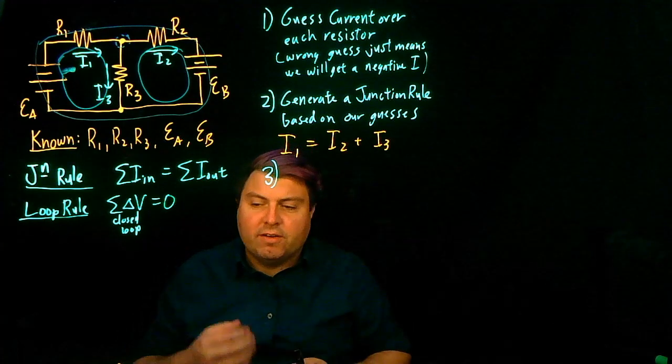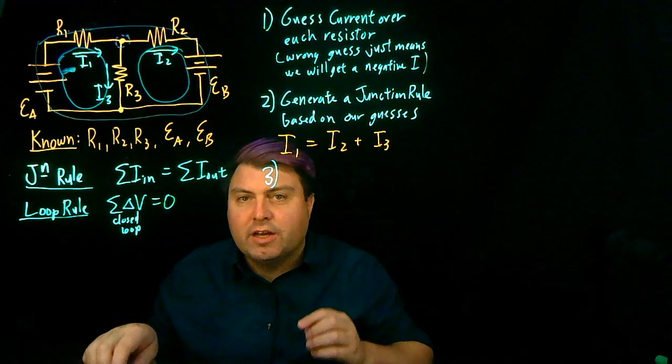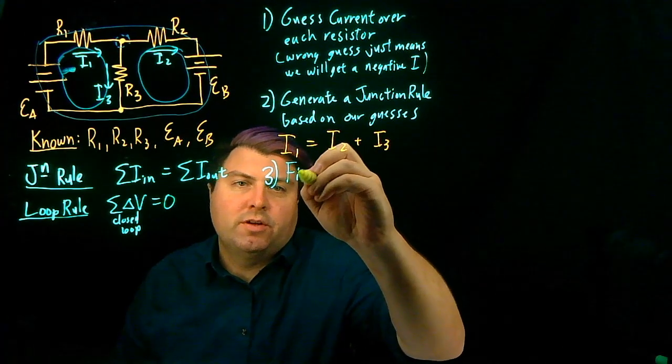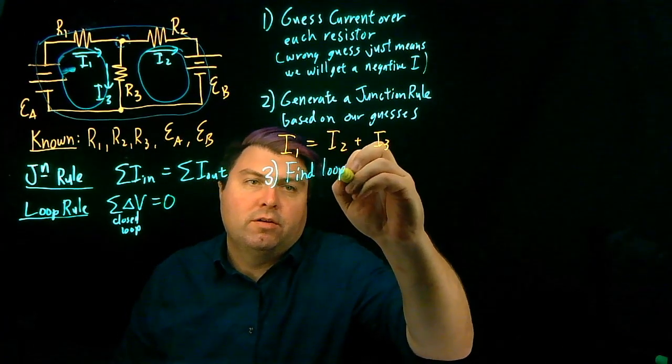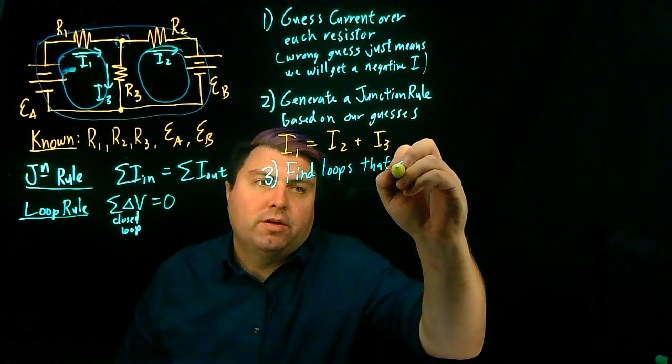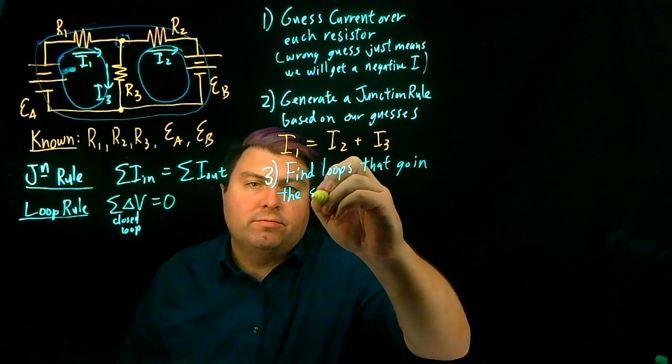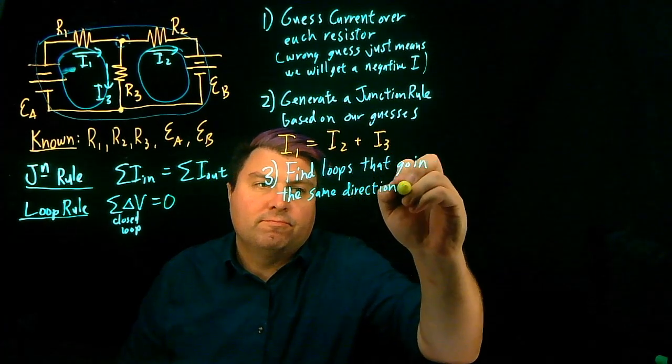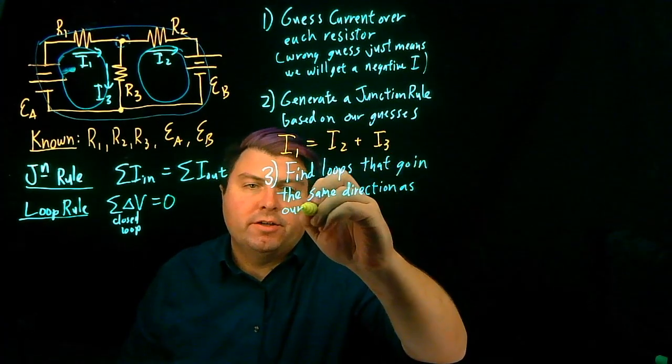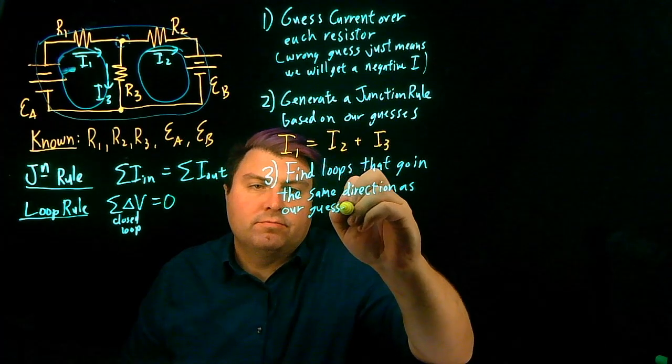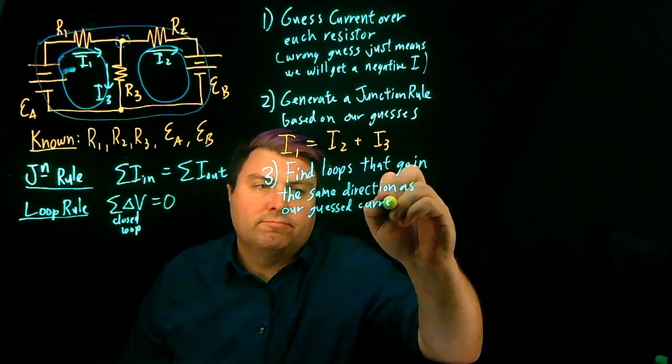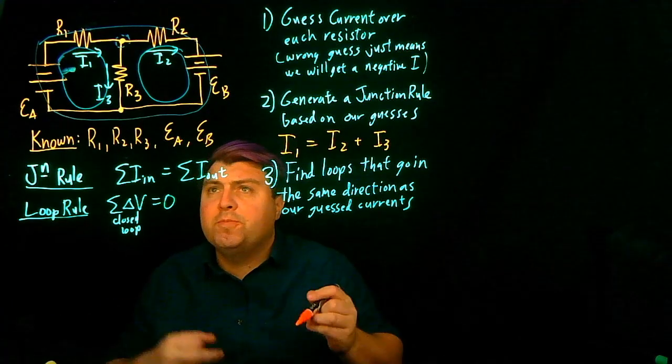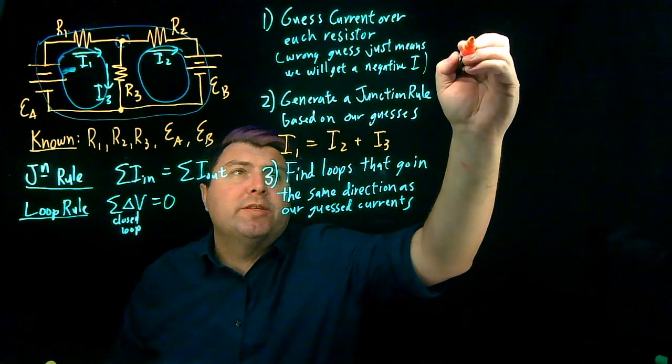So what we want to do is we want to find loops that go in the same direction as our guest currents.